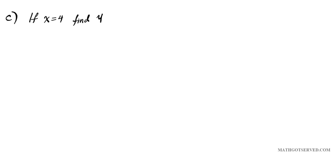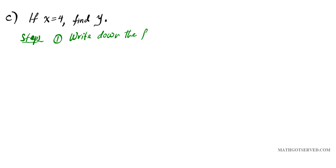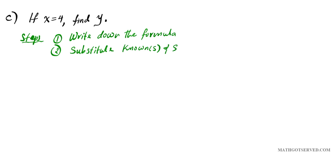Now for part c, we're told that if x is equal to 4, find y. When a direct variation is presented in function form, it's very easy to determine a variable given another one. All we simply do is write down the formula, substitute, and find the missing variable. Steps: one, write down the formula; two, substitute the known variables; three, solve.